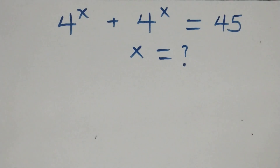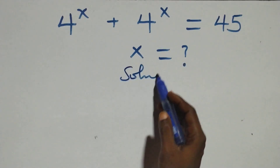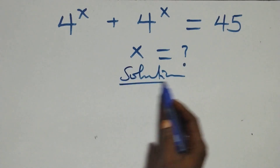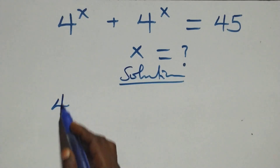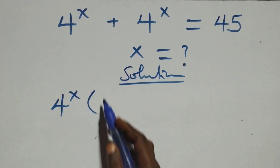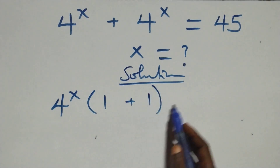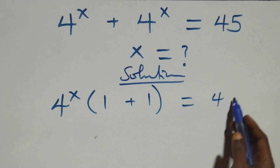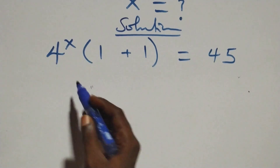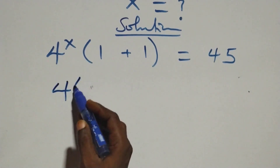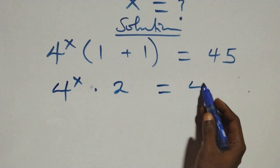Hello, you are welcome. Here we solve this exponential equation. We factor 4 raised to the power x out, giving us 4 raised to the power x, in brackets 1 plus 1, equals 45. This simplifies to 4 raised to the power x times 2 equals 45.